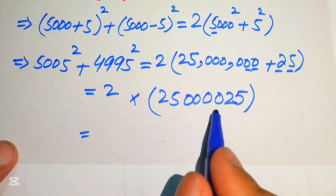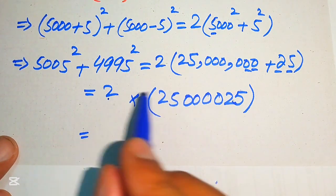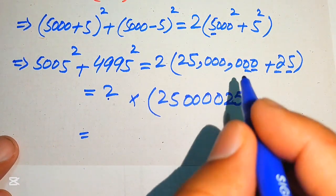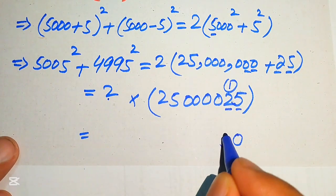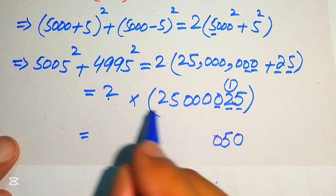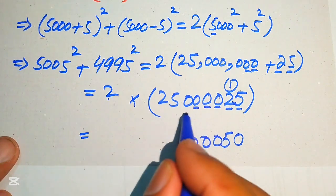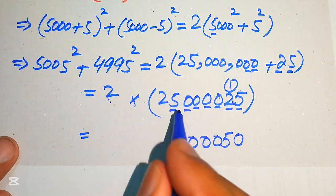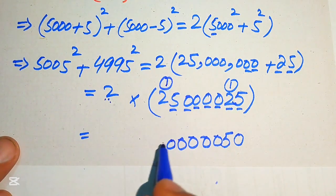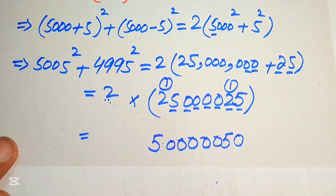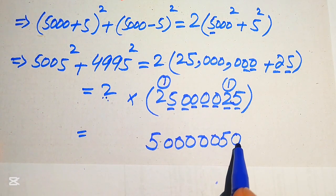Multiplying 2 by 25,000,025: 2 times 5 is 10, write 0 carry 1; 2 times 2 is 4, plus 1 is 5; and 2 times each zero gives zero. The result is 50,000,050.